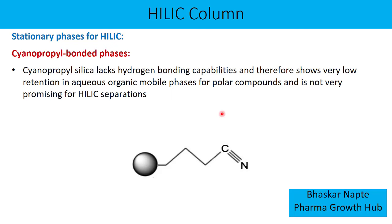The next stationary phase for HILIC is the cyanopropyl bonded phase. Cyanopropyl silica lacks hydrogen bonding because it is an aprotic functional group — it does not have a hydrogen atom connected to an electron-withdrawing group like nitrogen. Therefore it shows very low retention in aqueous organic mobile phases for polar compounds, and hence is not a promising stationary phase for HILIC separations.